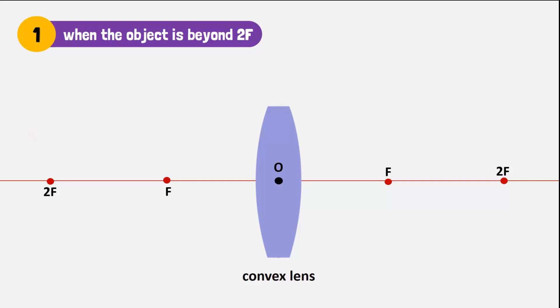Let's place a candle beyond 2F behind the lens. Draw a ray from the top of the candle refracting through the lens and passing through the focal point. The second ray will go through the optical center without refracting.